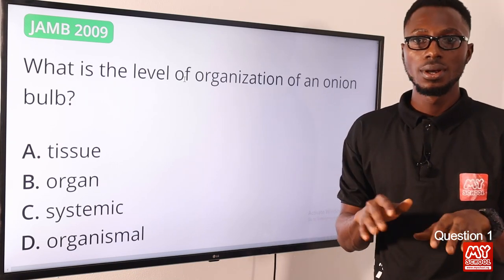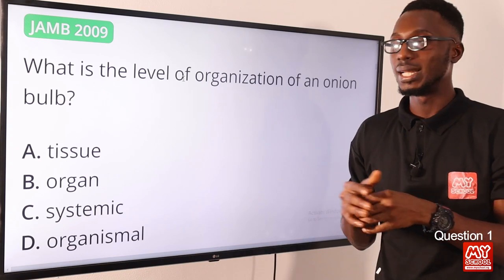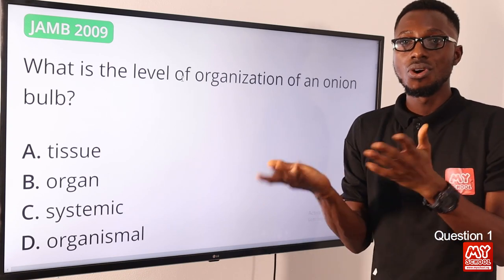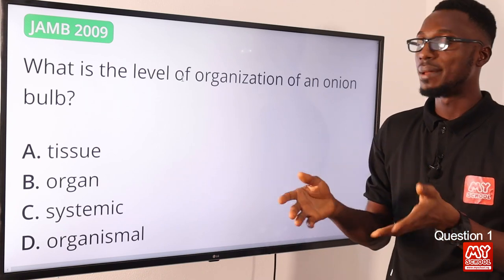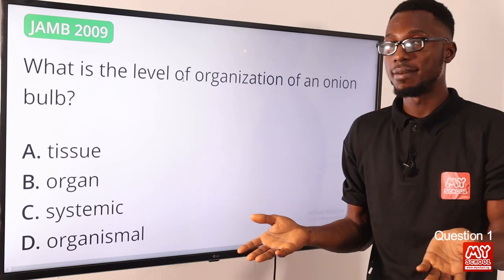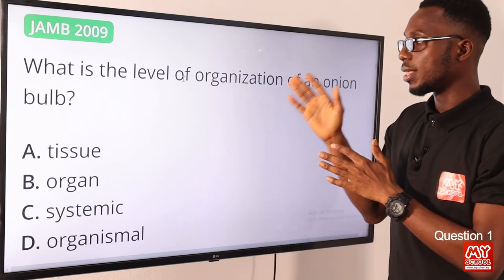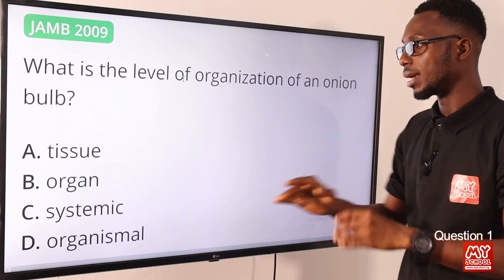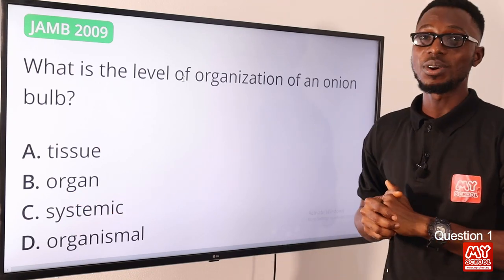Generally, the levels of organization go from micro molecules to organelles like your mitochondria and nucleus, then to cells, tissues, organs, organ systems, and the organism level. The level of organization of the onion bulb is at the organ level, so option B is the correct answer.